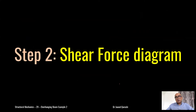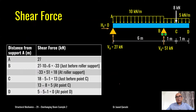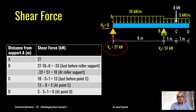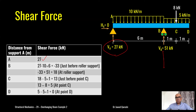Now I will find out the shear force diagram. For the shear force diagram I will start from the left. At A you just have 27 kilonewtons, so we have 27 there. Then I move to point B. At point B it is divided into two parts: just before the roller support, and at the roller support.